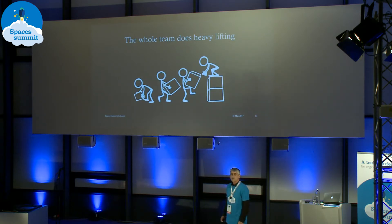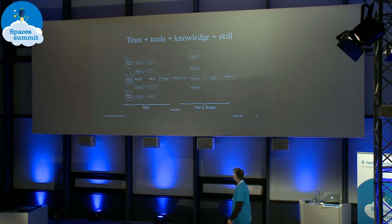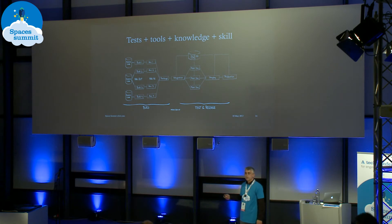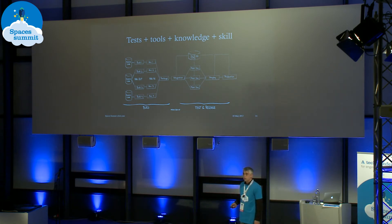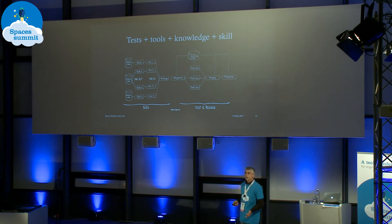The next question is: who does the testing? Well, the whole team does it, and the whole team is responsible for the quality of their code. How are they doing that? They write tests and use tools to help them execute those tests. For that, they need two things: domain knowledge and some kind of expertise to write those tests. Since we're talking about the development team, they certainly have that expertise.